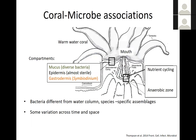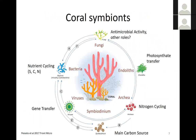We can distinguish three compartments in the adult animal. There's the mucus covering the tissue — a very dynamic habitat with changing bacterial associates that depend in part on the overlying water column, though some bacteria are also resident and commonly associated with corals. The epidermis appears almost sterile. In the gastrodermis of shallow water corals, we find the photosynthetic algal symbionts called Symbiodinium. Overall, there are some microhabitats that are anaerobic, and bacteria perform a wide range of nutrient cycling functions.